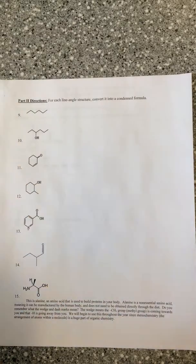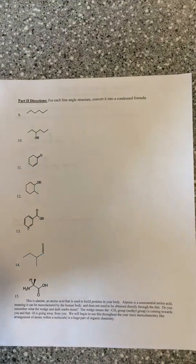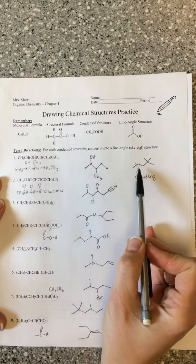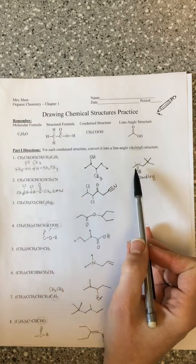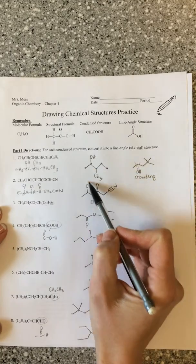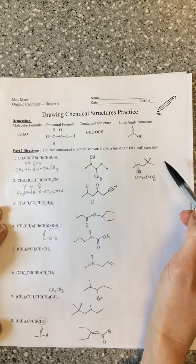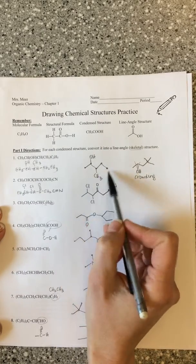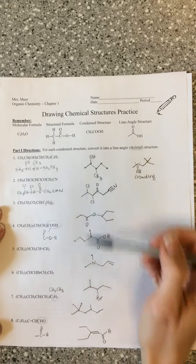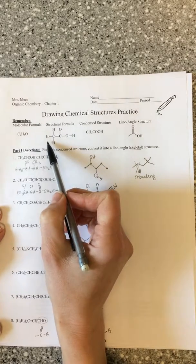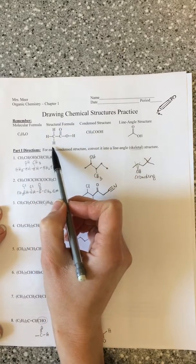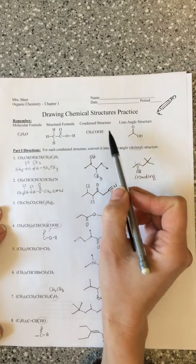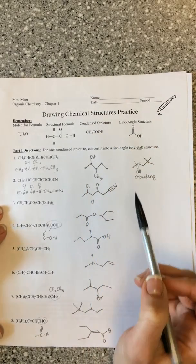Okay, so now for the second part of our practice with drawing chemical structures. In our first part, we took condensed structures and converted them into skeletal structures. That's an important skill because it's easier to draw skeletal structures, especially if you have to draw multiple structures as you're showing a reaction mechanism or something of that nature.